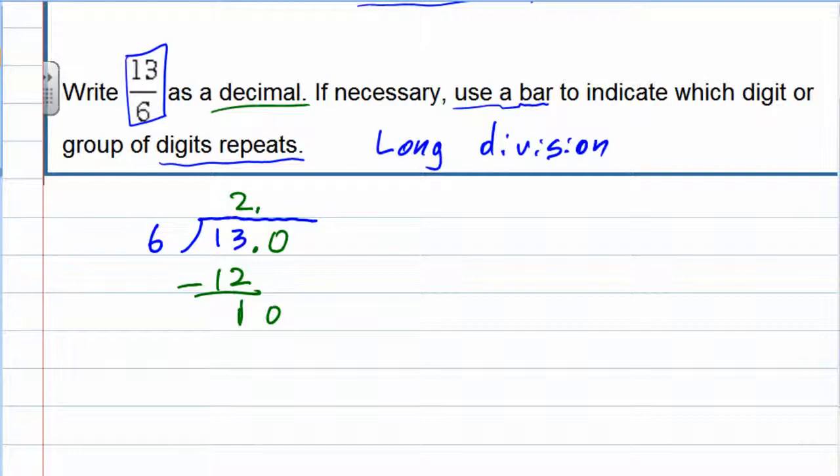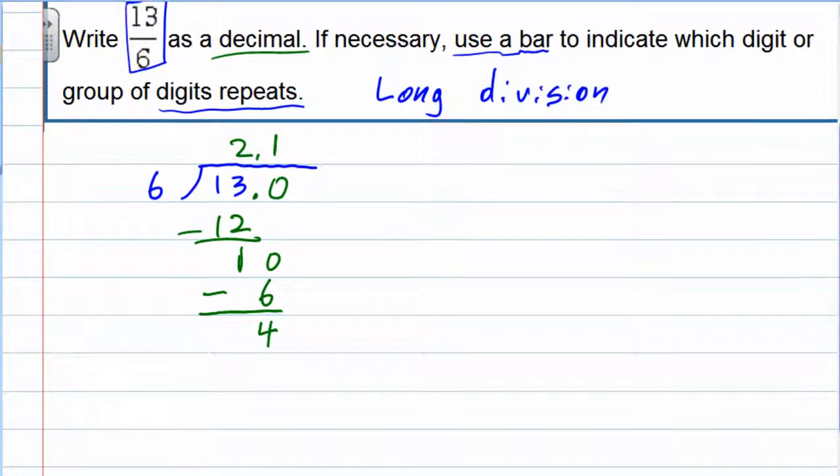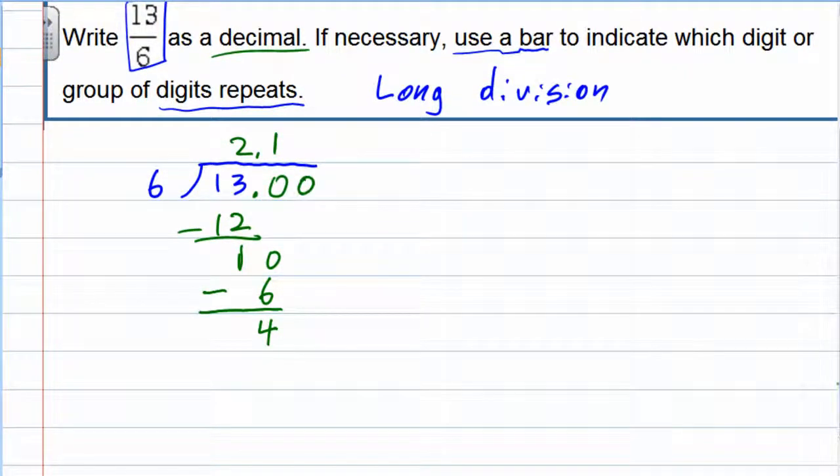So 6 goes into 10 now, also once. 1 times 6 is 6. When we do that, that gives us a remainder of 4. So we're still getting that remainder. I want to add another zero just so that we can keep going. Bring that one down.